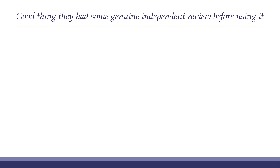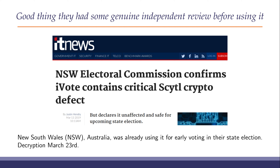Nevertheless, it's a good thing in the Swiss case that they had some genuine, independent, reasonably open review before they used this system — this was happening six months before the Swiss were intending to use it in their later elections. But Cytle is an international software company. They'd already sold the same system to New South Wales in Australia, and New South Wales was using it in their state election right at that time. We found out about these things in March of 2019. Australia was already taking votes and was intending to use it for decryption on state election day of March the 23rd.